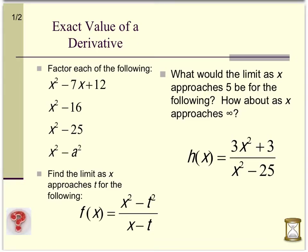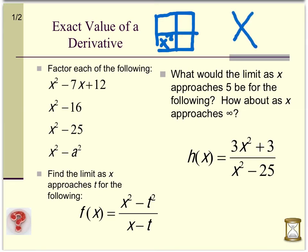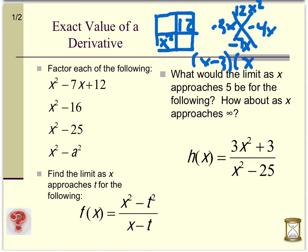Let's review some factoring problems. The first problem is x squared minus 7x plus 12. I'll use the box and diamond method. The x squared goes in one corner, the plus 12 in another, the minus 7x goes in the bottom of the diamond. I multiply the diagonal and put that in the top of the diamond, then look for two numbers that add to negative 7 and multiply to 12. Negative 4x and negative 3x work well here.